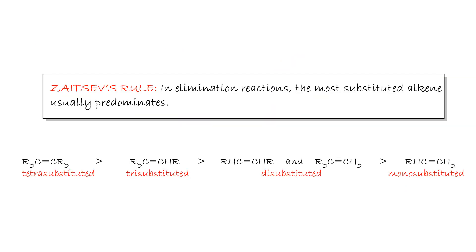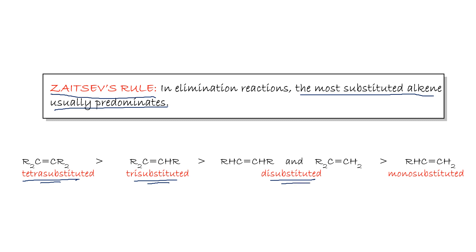This leads to Zaitsev's rule: in elimination reactions, the most substituted alkene usually predominates. Tetrasubstituted is more stable than trisubstituted, which is more stable than disubstituted (either on the same carbon or adjacent carbons), which is more stable than monosubstituted.